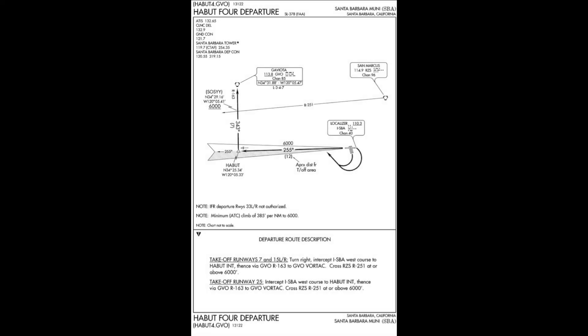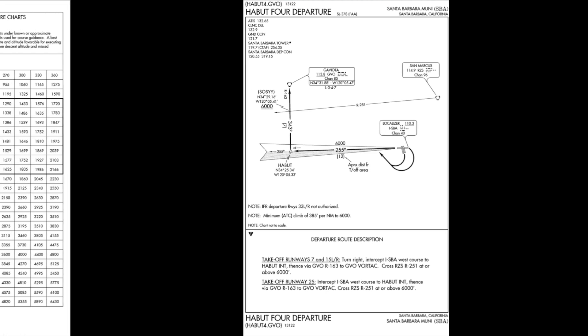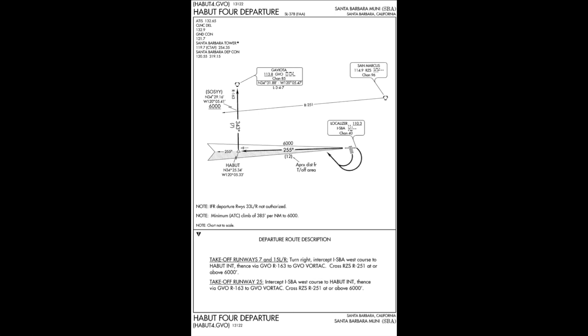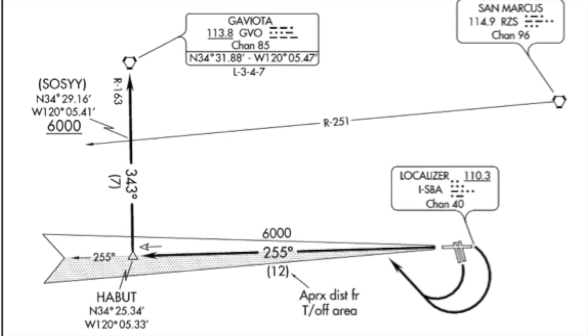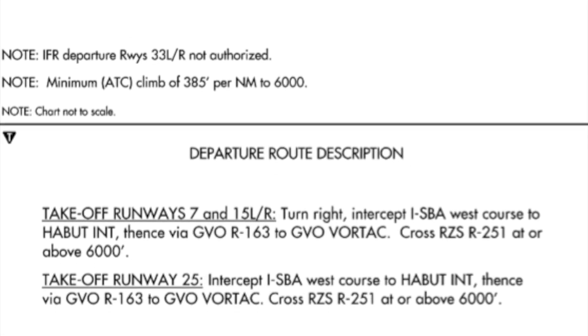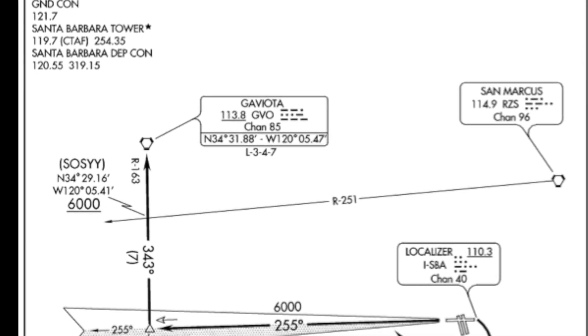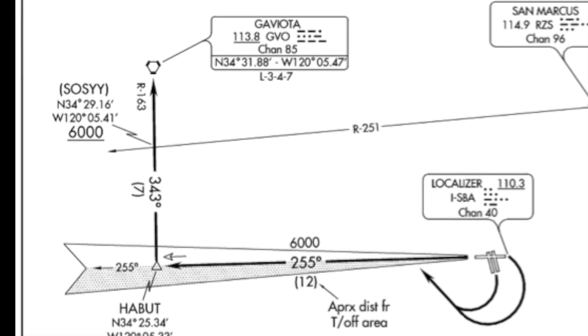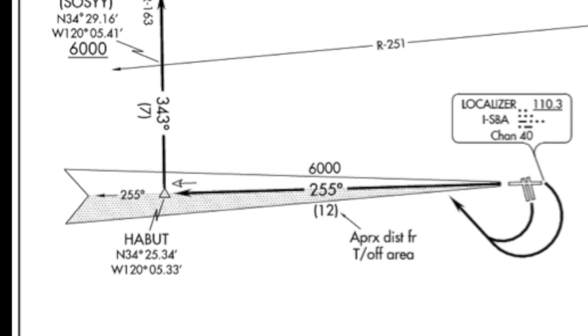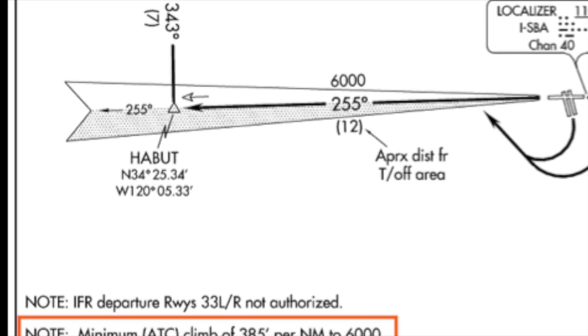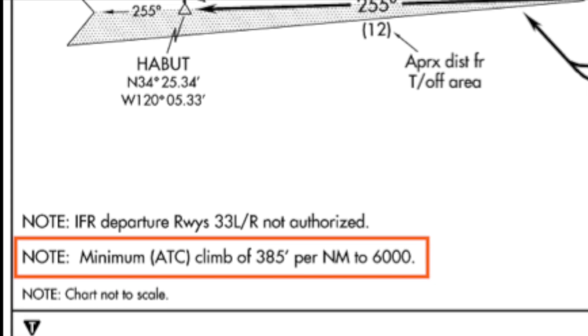Unfortunately, with a written exam you may be provided with figures and information that may not be useful to finding your answer. Sometimes this is done as a distraction, and in this particular case the climb and descent table will not come in as handy as the first time. We just don't have the pertinent angle degree information present in this scenario. We will find on the departure procedure that there is a note section stating that for this departure, we would have to climb 385 feet per nautical mile traveled, at least up to 6000 feet.